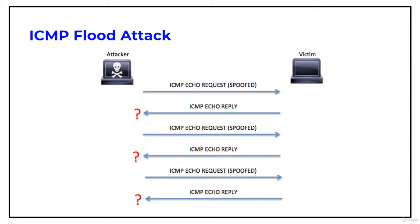The next is ICMP flood attack. Network administrators use ICMP primarily for IP operations, troubleshooting, and error messaging of undeliverable packets. ICMP flood attack is a type of attack in which attackers send large volumes of ICMP ECO request packets to a victim system directly or through reflection networks.